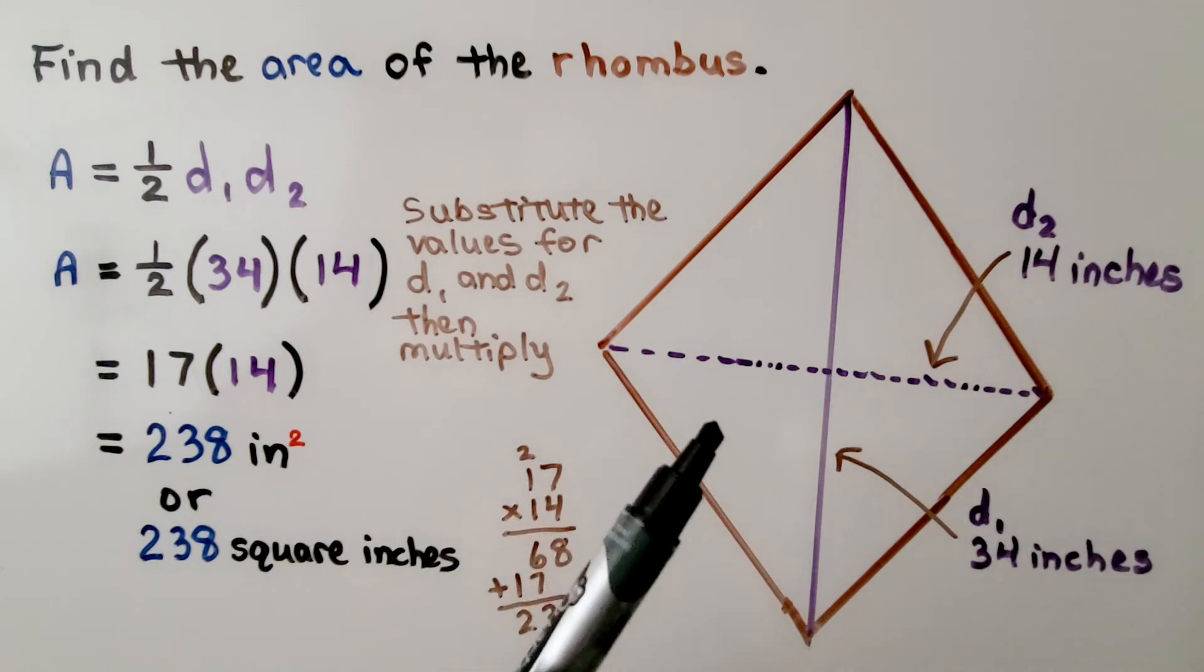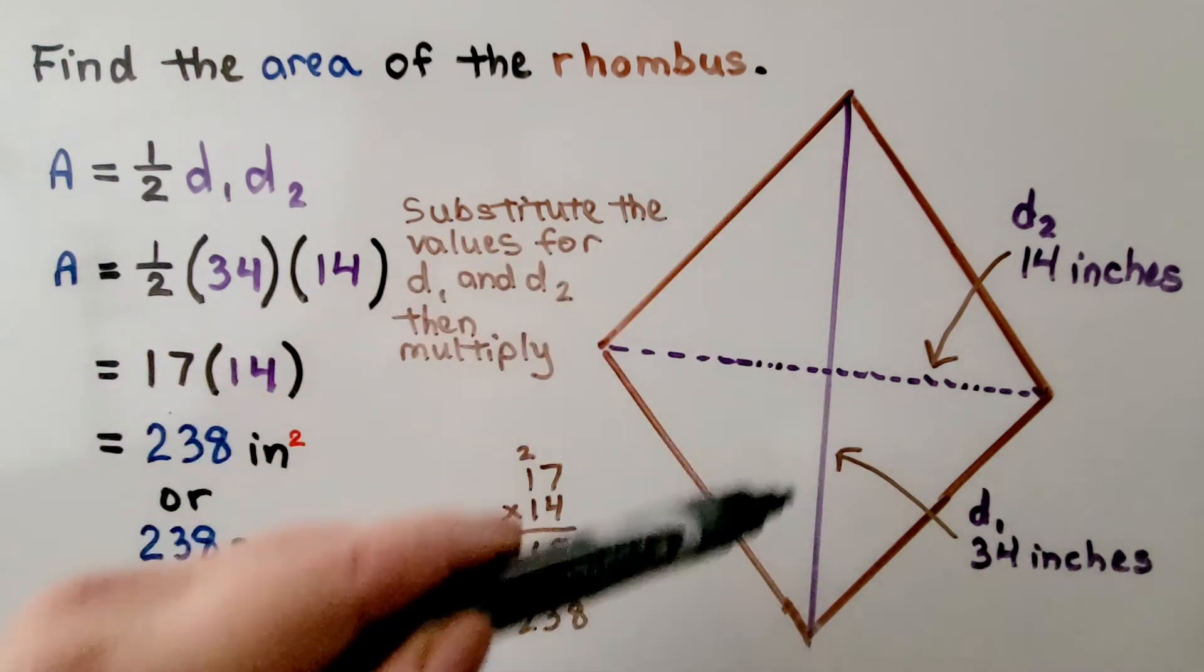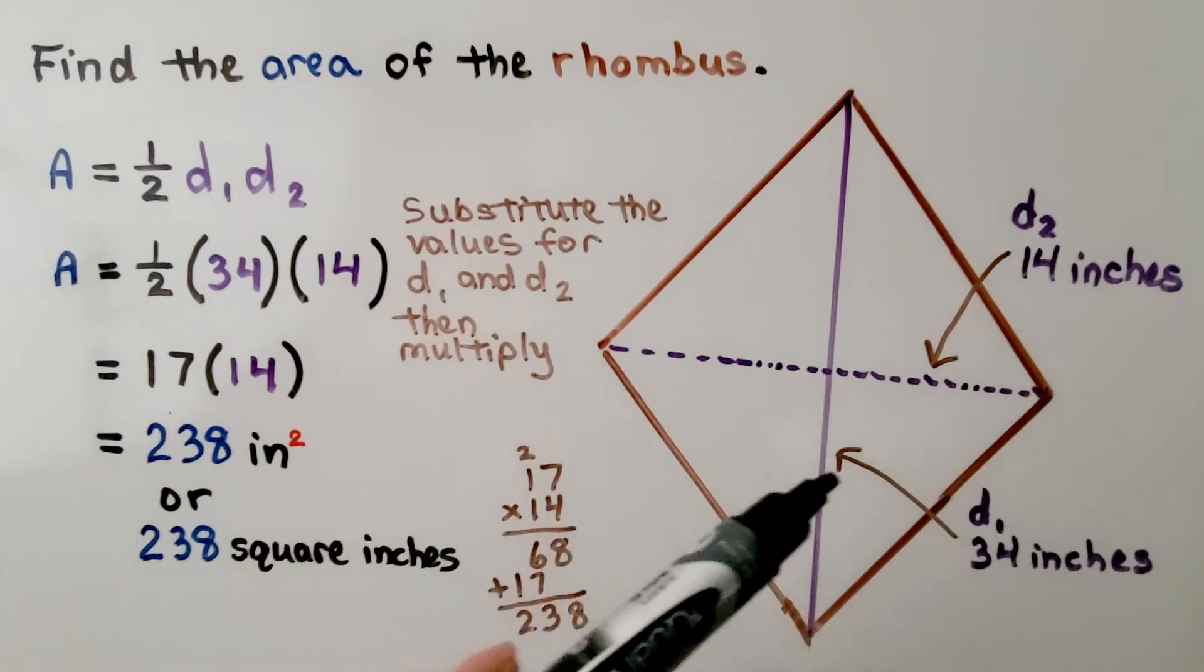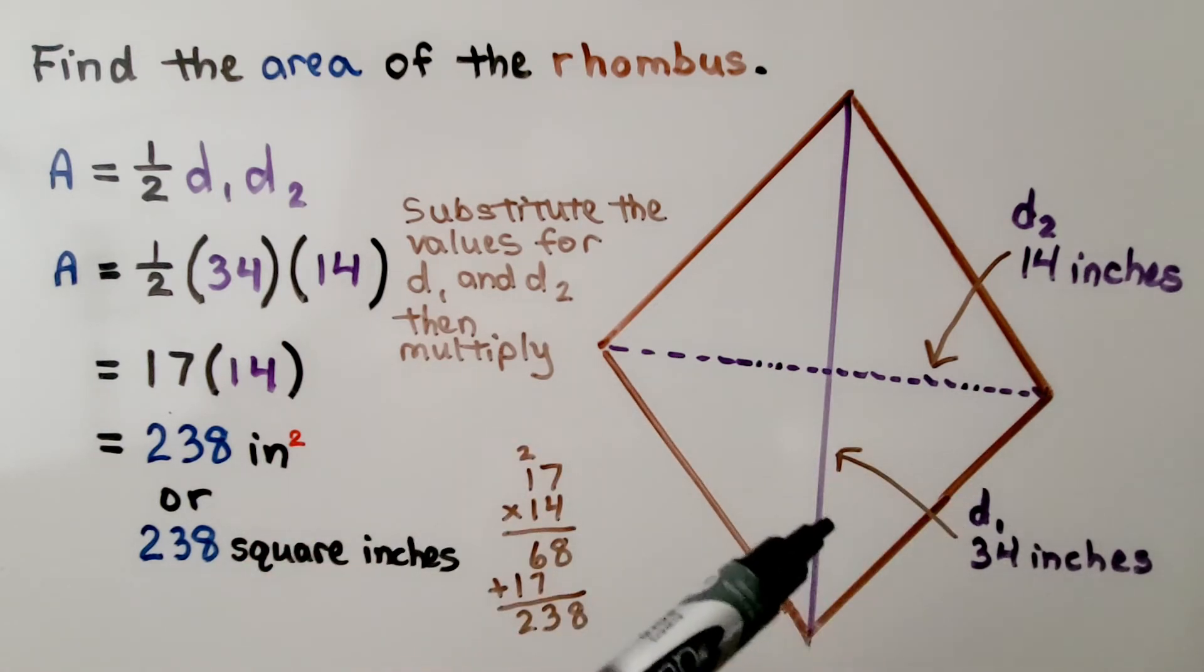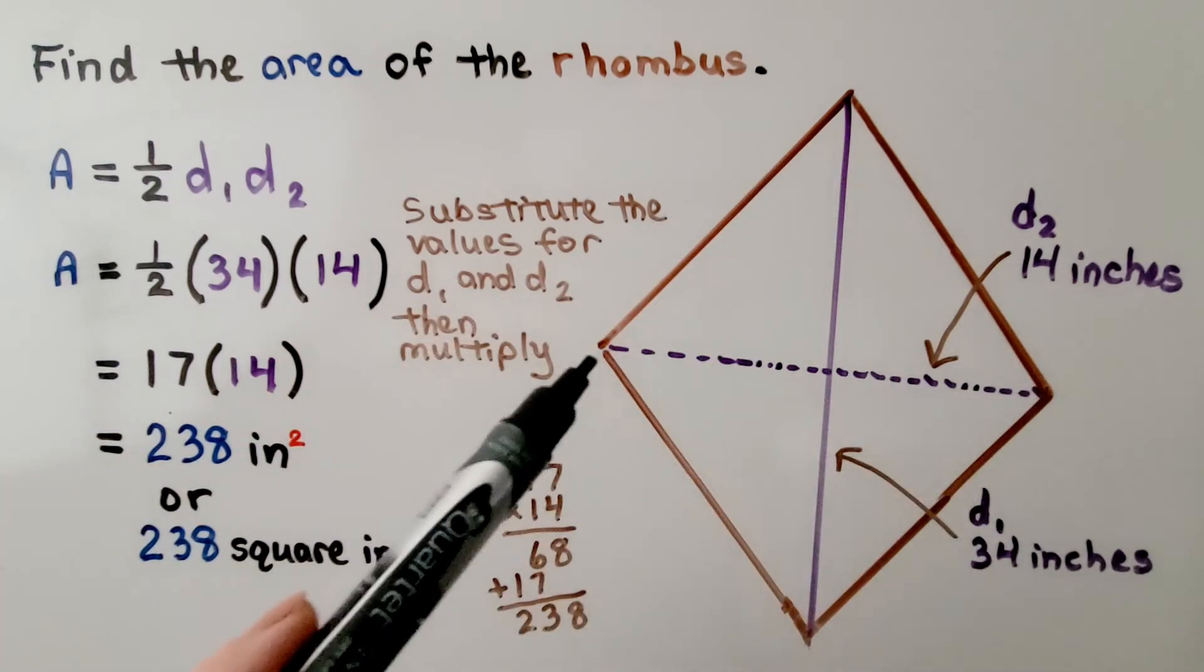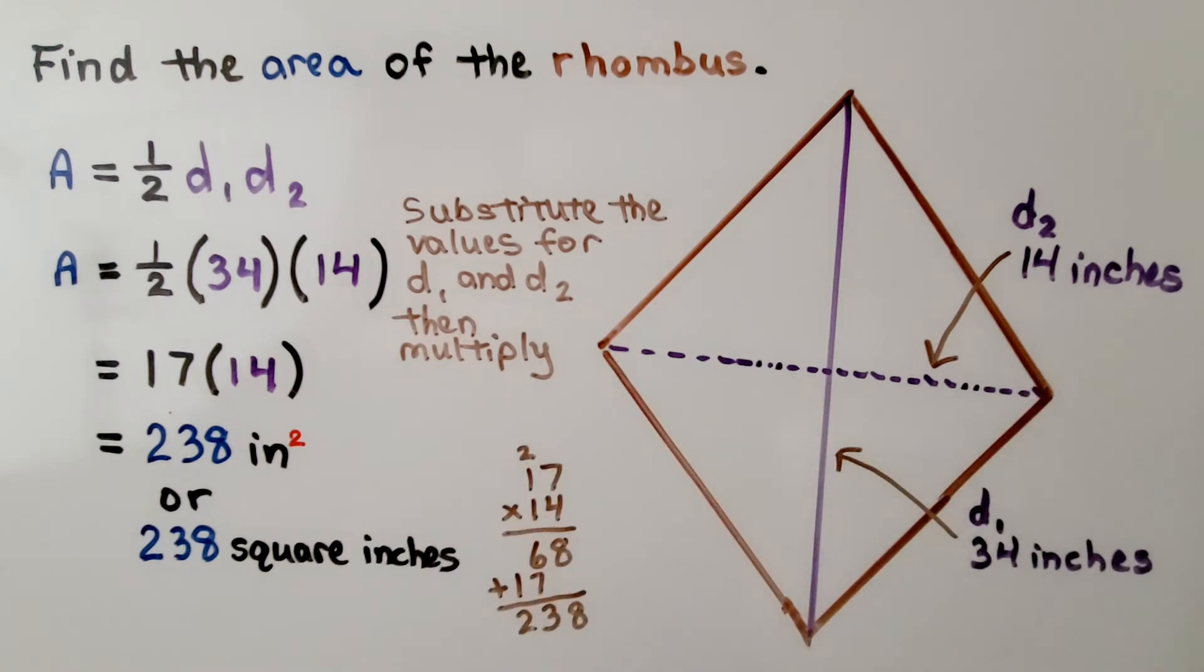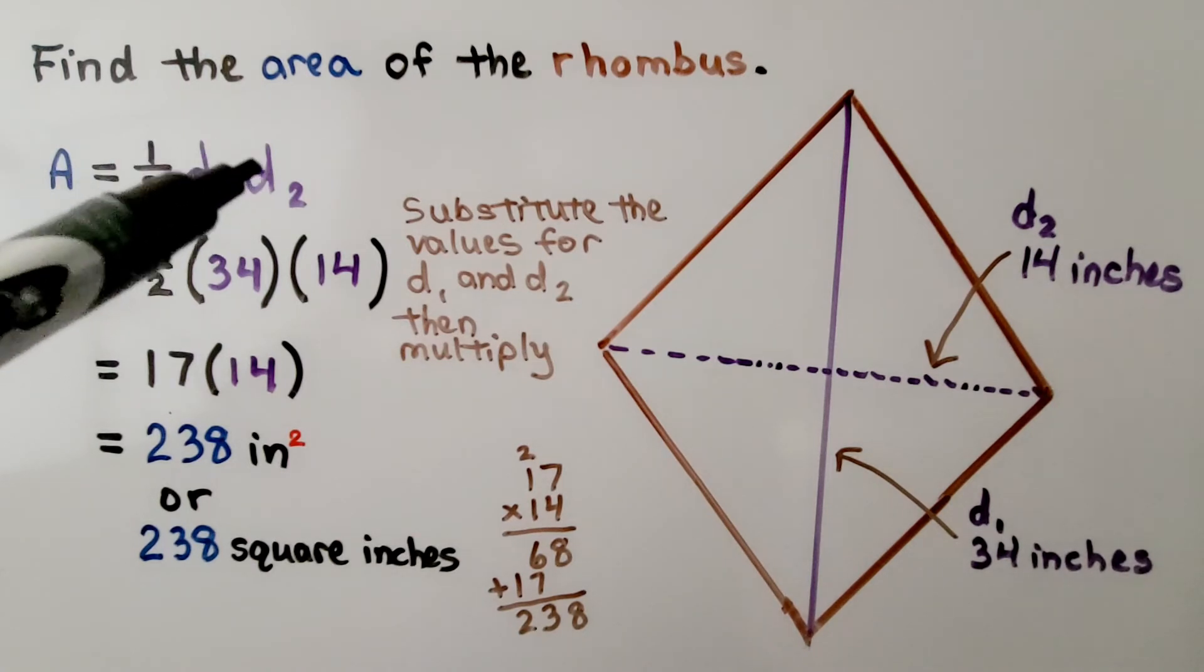Let's try another one. The orientation of this rhombus has changed, but we still know that this is a diagonal and this is a diagonal. It's telling us that the first diagonal, d sub 1, is 34 inches, and the second diagonal, d sub 2, is 14 inches. Remember, when we have a variable and you see this little number, that's a subscript, and that helps us differentiate between this d and this d.